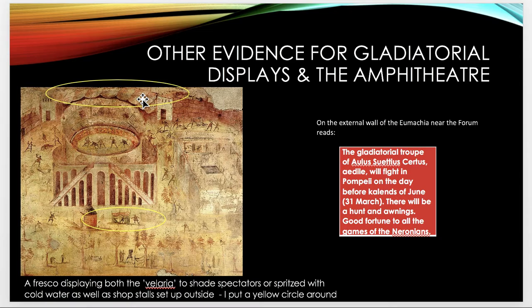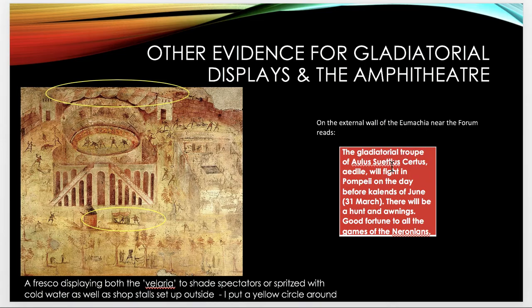We could also have stalls outside the amphitheatre, for which you would have needed permission from the aediles — not unlike stalls selling jerseys and hats at a rugby league match today. We also find graffiti on the wall of the Eumachia near the forum, advertising a gladiatorial troop belonging to someone, confirming that gladiators could be privately owned.